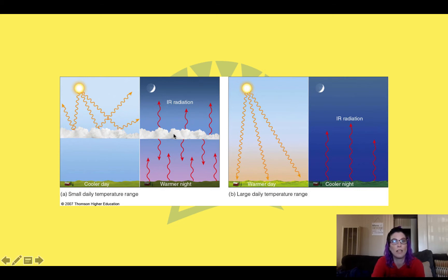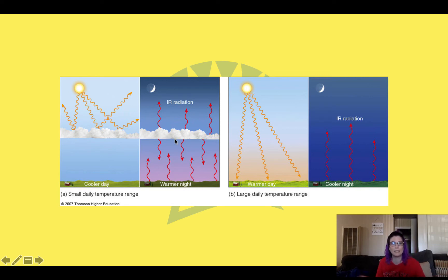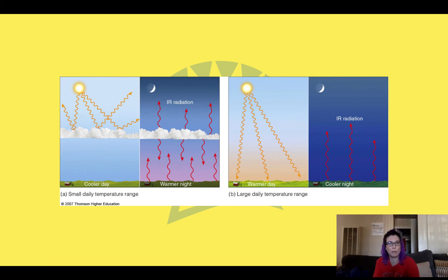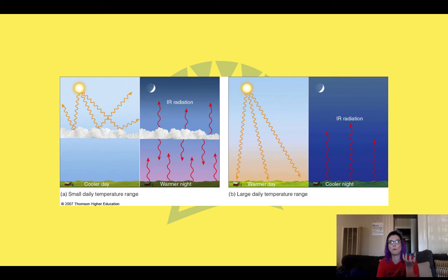When there are clouds in the sky, during the day, we have incoming solar radiation, but the clouds are going to block a portion of it — they reflect it and it goes out. But during the night, when we have this outgoing terrestrial radiation, it's going to come and hit the cloud, and then the cloud is going to act like a blanket and prevent it from leaving. Some of it will leave, but some of it is also going to come back down to the earth. So that results in a warmer night than it normally would be. During a day and night where there are actually clouds in the sky, we're going to have less of a temperature difference between the day and night.